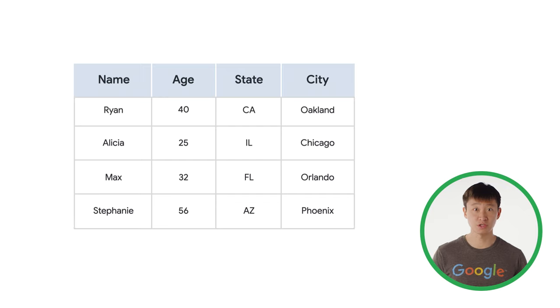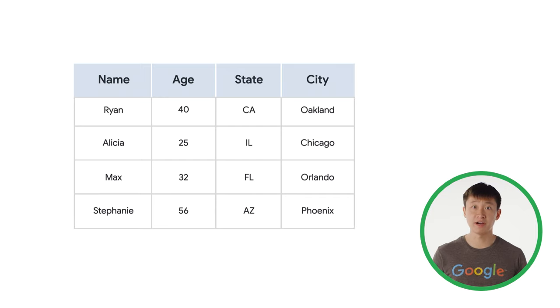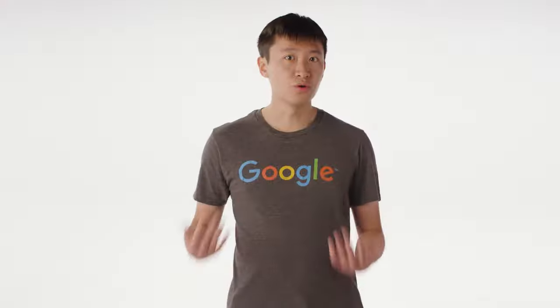Relational databases store structured data in tables, rows, and columns based on a predefined schema. They are often used for applications where the structure of the data does not change often. Google Cloud handles many of the mundane, time-consuming tasks of managing a database, like patches, updates, backups, and replicas, so you can focus on building your application.